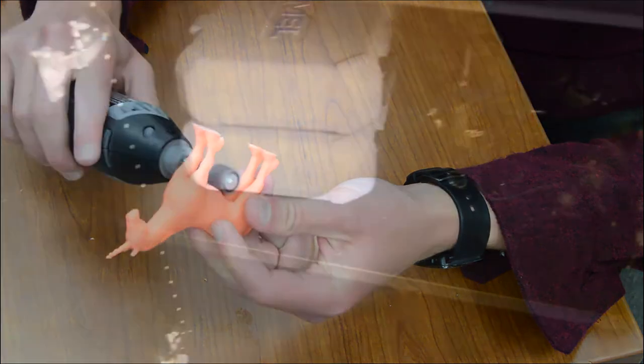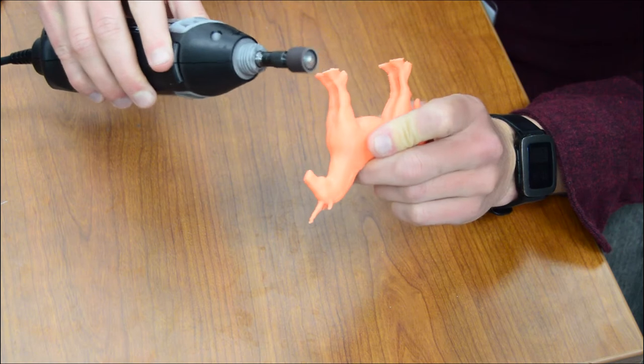The dremels and their attachments can be found in a cabinet in the machining studio. Ask a technician for help setting this up.